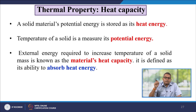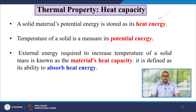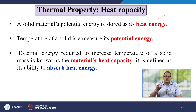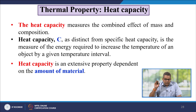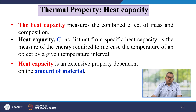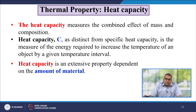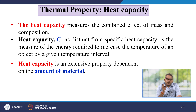Now let us talk about heat capacity. The external energy required to increase the temperature of a solid mass is known as the material's heat capacity, defined as its ability to absorb heat energy. Heat capacity measures the combined effect of mass and composition, usually denoted as C. It is distinct from specific heat capacity and is an extensive property — it is a measure of the energy required to increase the temperature of an object by a given temperature interval, and depends on the amount of material.